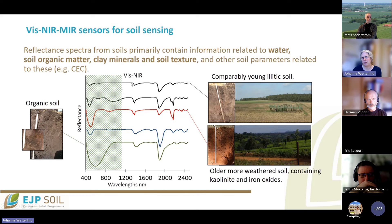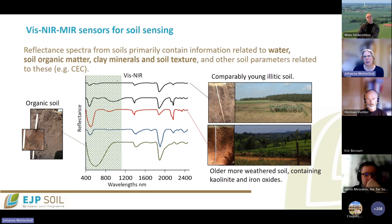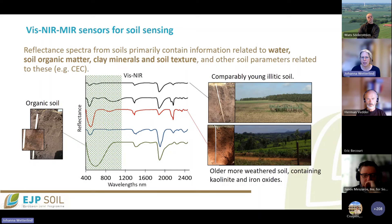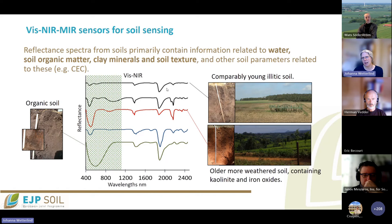Regarding the wavelength ranges of instruments: visible near-infrared is used a lot for looking at vegetation, and the region up to about 1100 nanometers is sufficient for plants. But for soil, especially for clay content or minerals, it is also interesting to have a sensor going all the way to around 2500 nanometers.